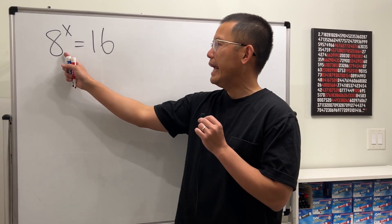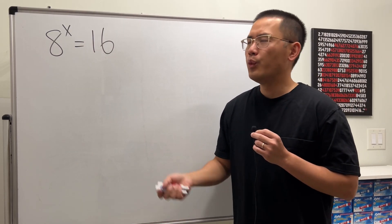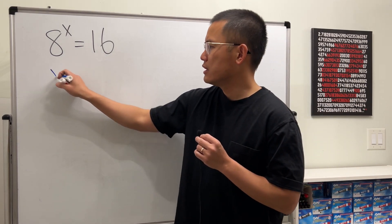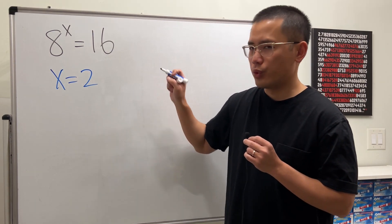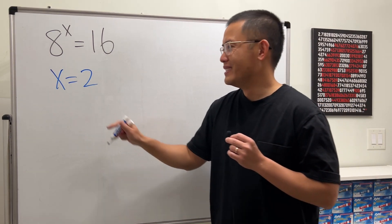So if you first take a look at the equation, 8 to the x power is equal to 16. Well, the answer for this right here is just x is equal to 2, right? No, this is actually not correct.